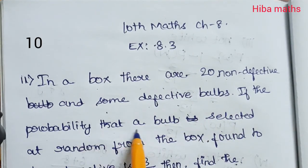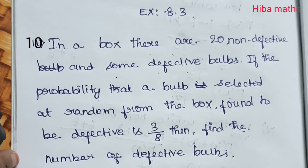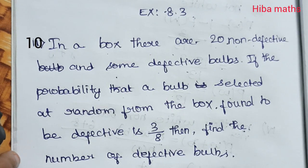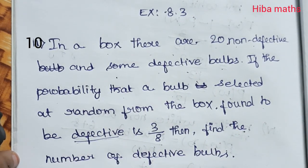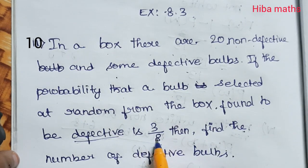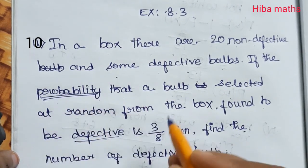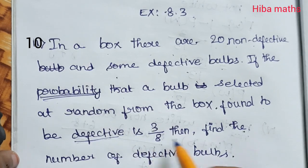If the probability that a bulb selected at random from the box is found to be defective is 3/8, the probability of defective is 3/8.